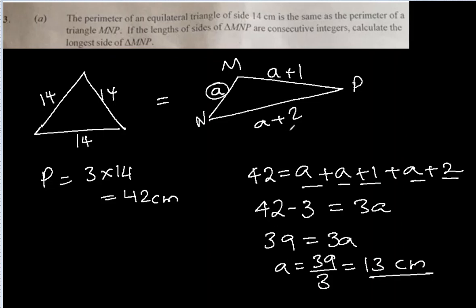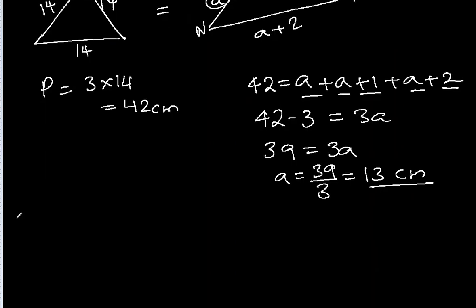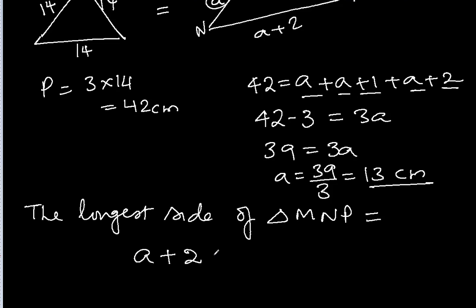The one which is here, which is here. We have to find a plus 2. So we'll write the longest side of triangle MNP is equal to a plus 2, which is 13 plus 2, 15 cm.